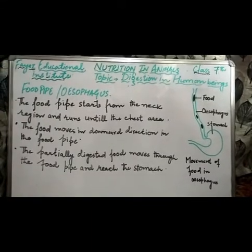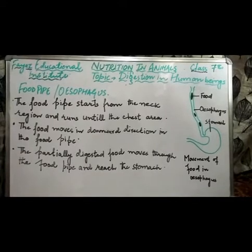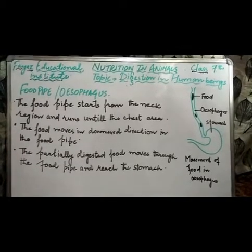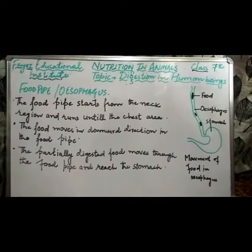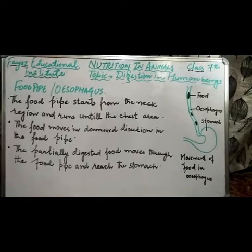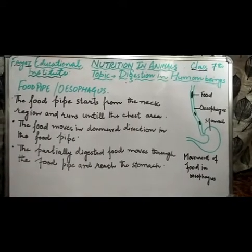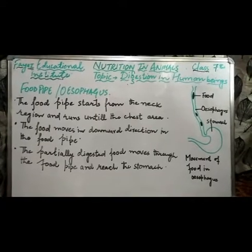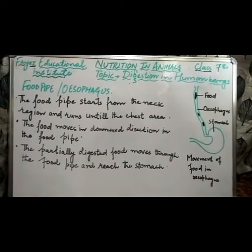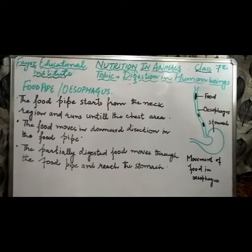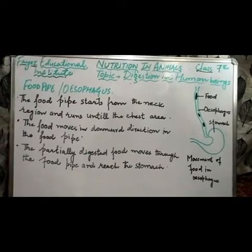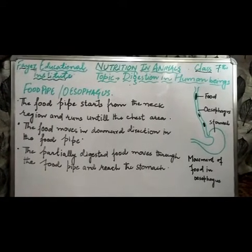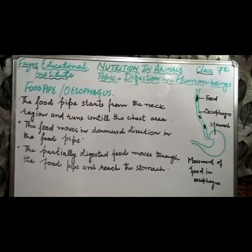Now let's go to the food pipe. The food pipe starts from the neck region and runs down through the chest area. Food moves in a downward direction in the food pipe. The partially digested food moves through the food pipe and reaches the stomach. So students, remember that the food pipe starts from the neck, passes through the chest, and takes food down to the stomach. Today we have studied the buccal cavity and the oesophagus.